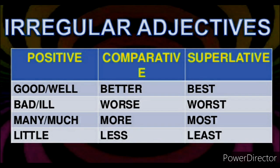Irregular adjectives: there are some adjectives whose comparative and superlative degrees are formed in a different way. For example — positive: good, comparative: better, superlative: best. Bad → worse → worst. Many or much → more → most.